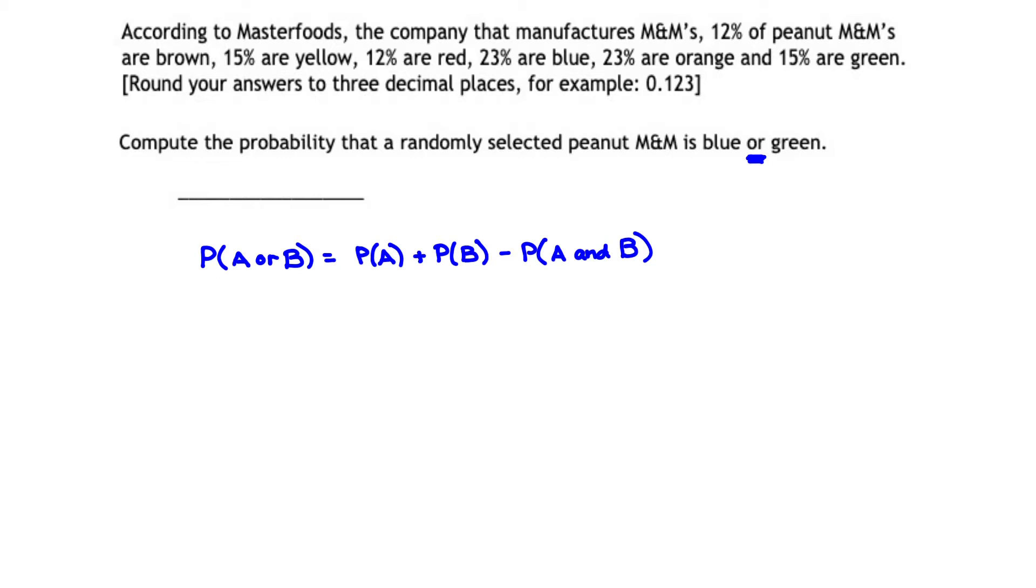This might look familiar to many of you. It's basically the cardinality rule in disguise. Remember the cardinality rule for sets: the number of elements in the union equals the number of elements in one set plus the number in the other minus the number in the intersection.